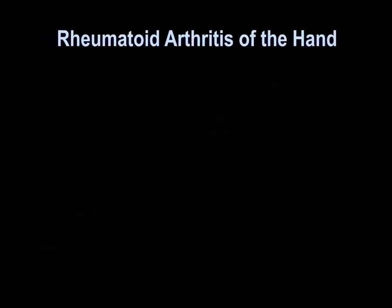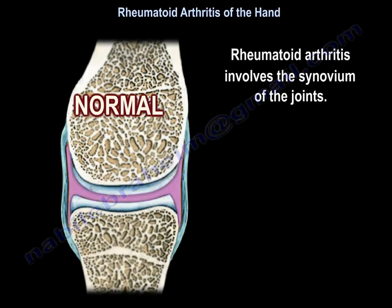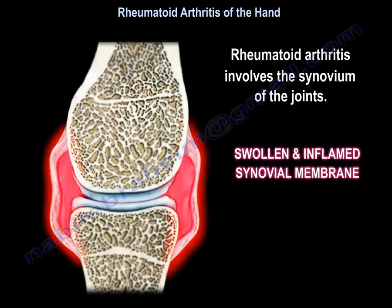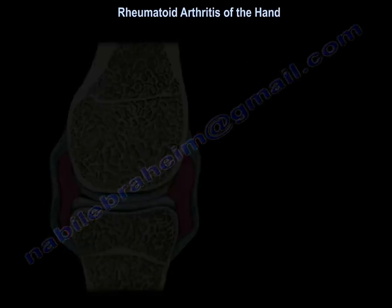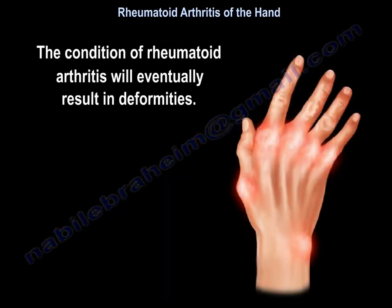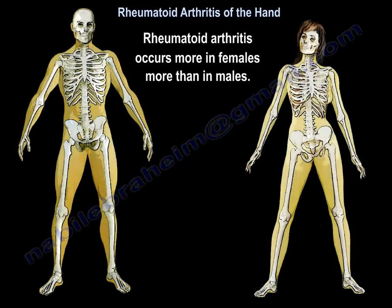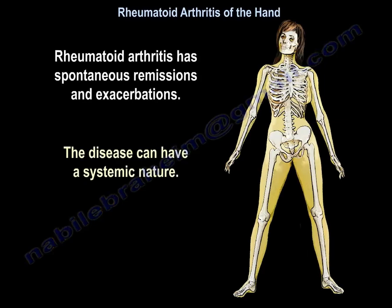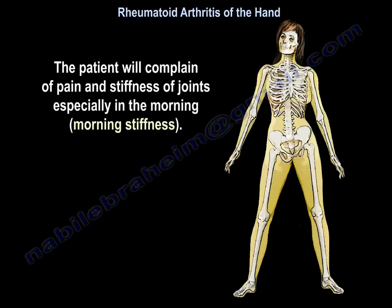Rheumatoid arthritis of the hand involves the synovium of the joints, as seen here with a swollen, inflamed synovial membrane. The condition will eventually result in deformities. Rheumatoid arthritis occurs more in females than in males, there may be a hereditary component, and it has spontaneous remissions and exacerbations. The disease can also have a systemic nature.